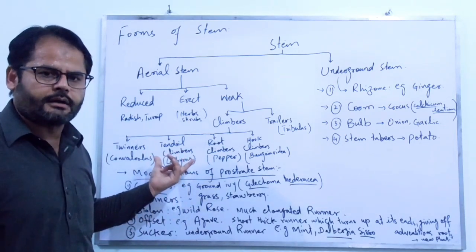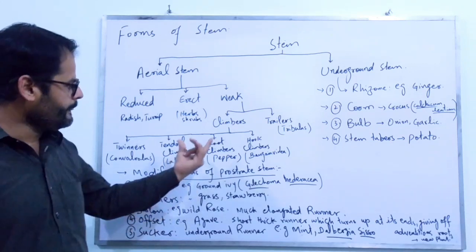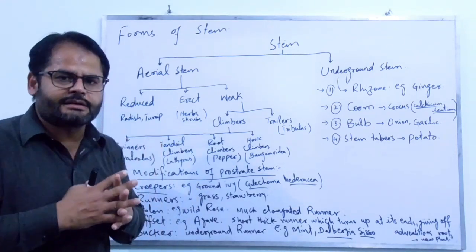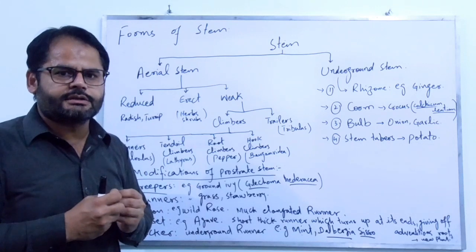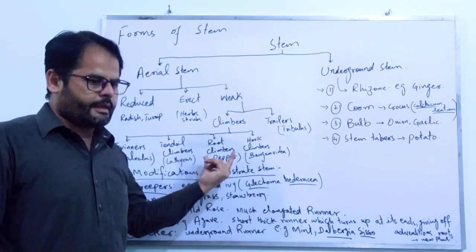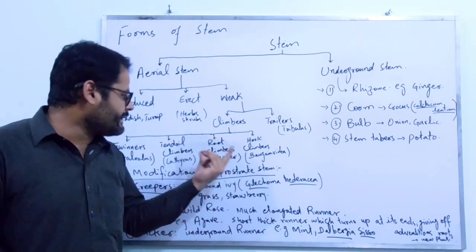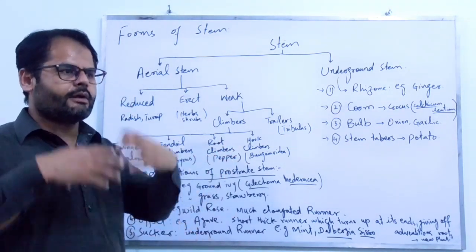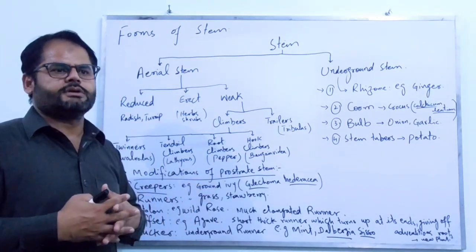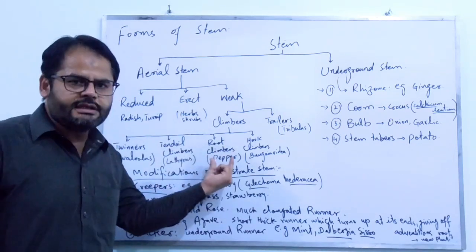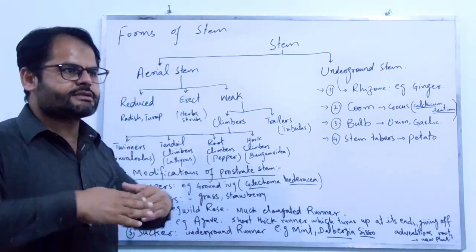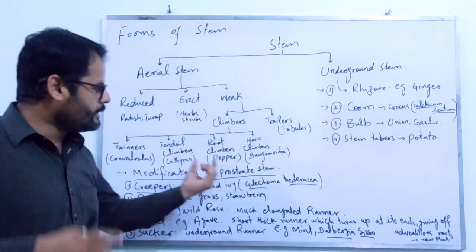The third type is called root climbers. Root climbers are those plants which climb upon any object with the help of certain sticky roots. Most ornamental plants are included in this category. We have often seen such plants in gardens or educational institutions where they stick to the surface of a wall through these sticky roots and grow upward towards the sunlight. An example is pepper.